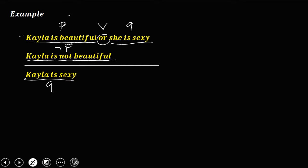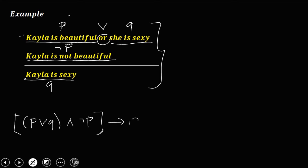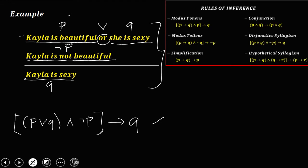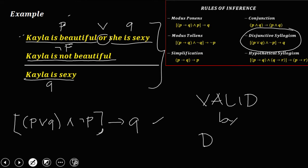To create an equation from this argument: P ∨ Q, then a conjunction and ¬P, then implies Q. So the equation is (P ∨ Q) ∧ ¬P → Q. We check this in the rules of inference — this matches the disjunctive syllogism. Therefore, this argument is a valid argument by the disjunctive syllogism. If the equation of the given argument is found in the rules of inference, then that argument is valid.